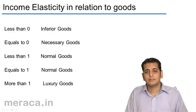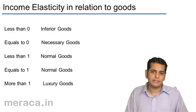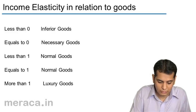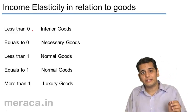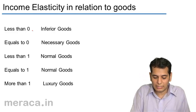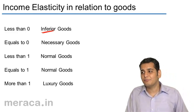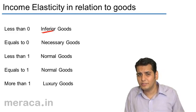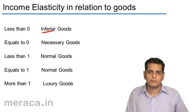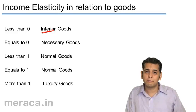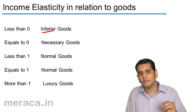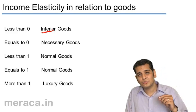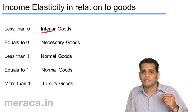Let's see what kind of elasticity demand has in relation to income for different goods. If the elasticity of income is less than zero, we can conclude that the goods being considered are inferior goods. Why would the elasticity of demand for inferior goods be less than zero? Because we have learnt this in the Giffen paradox — as the income of a person rises, the consumption of inferior goods gets reduced.